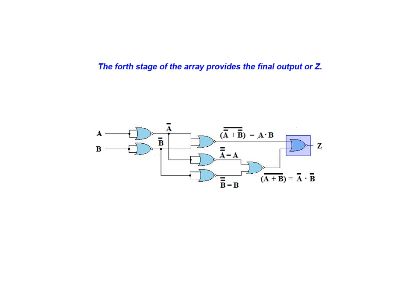The fourth stage of the array provides the final output. This output has been labeled Z in our diagram. The last NOR gate in the array has inputs A and B being NOR'd with NOT A and NOT B.